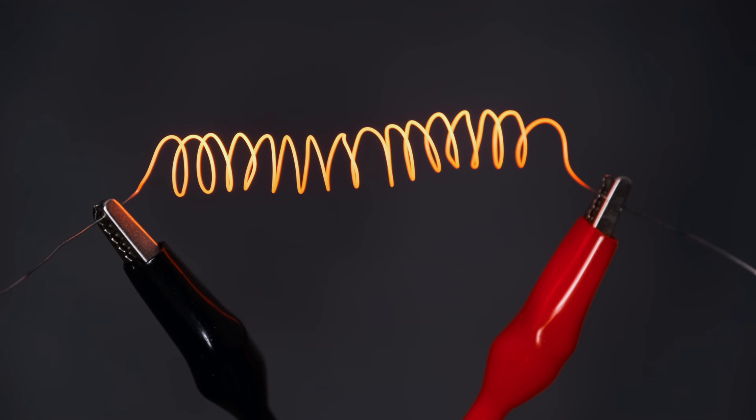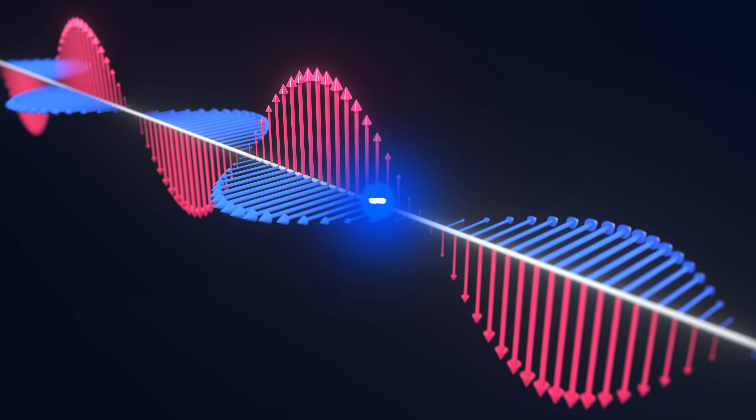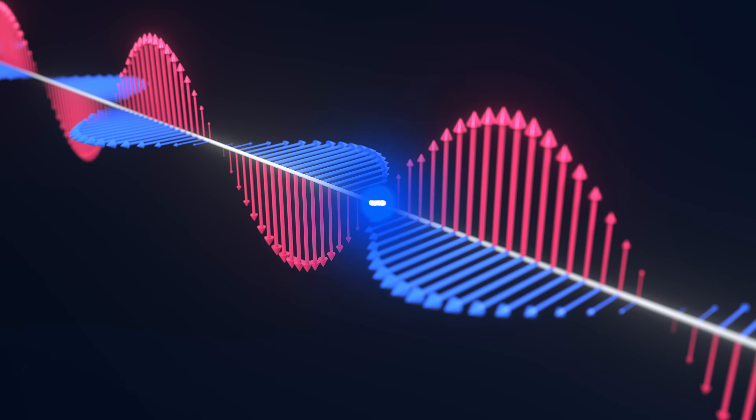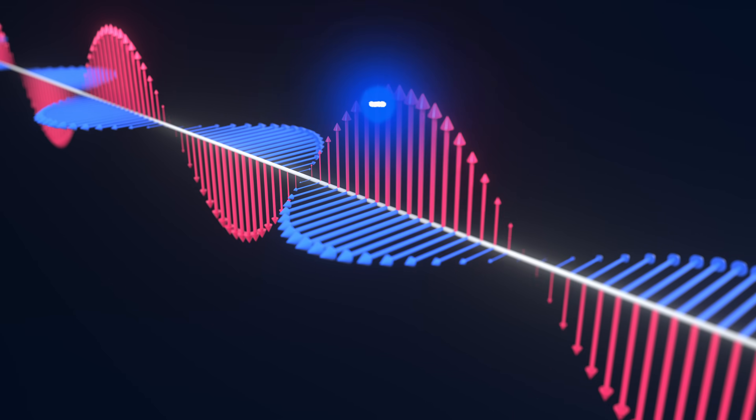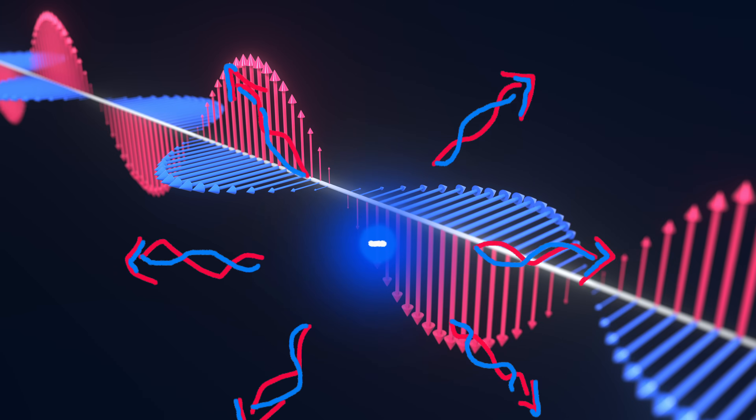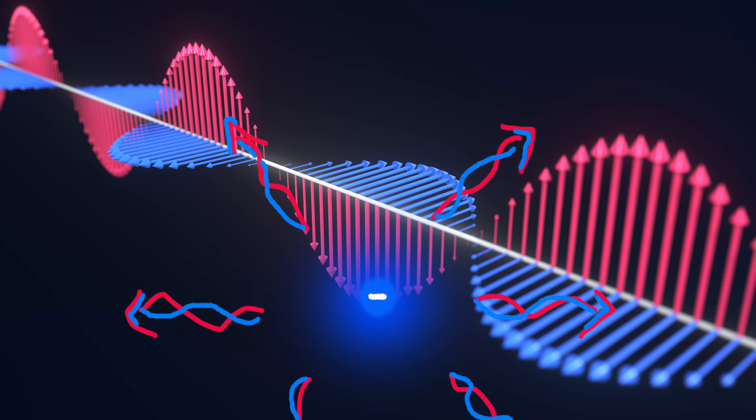When an electromagnetic wave encounters a free charge like an electron, the electric component of the wave will attract and repel the electron, causing it to oscillate in sync with the wave. And since electrons are charged particles, it will distort the electromagnetic field as it oscillates, re-emitting the same frequency light in almost all directions.